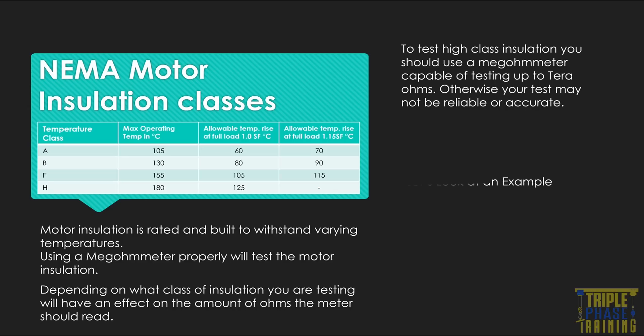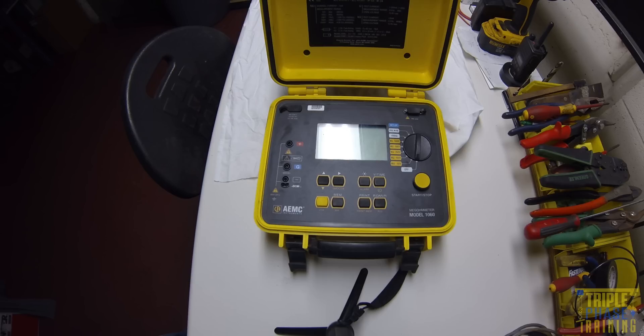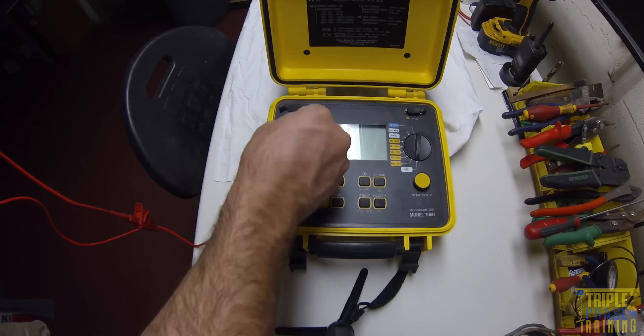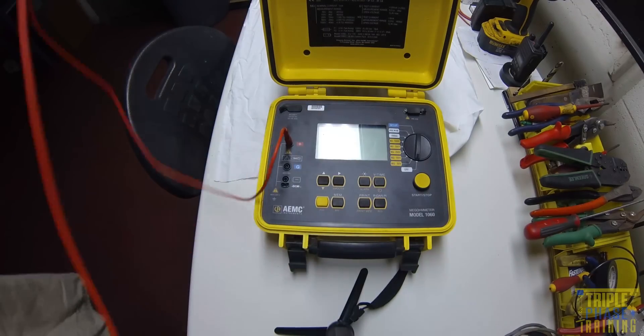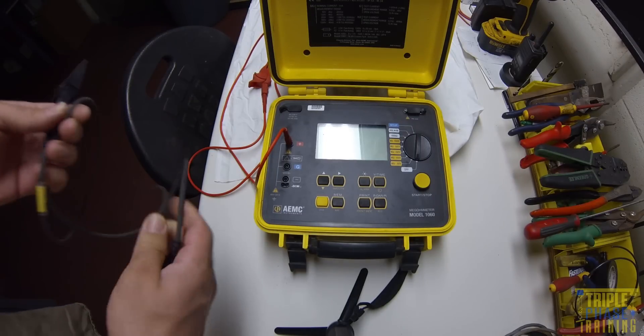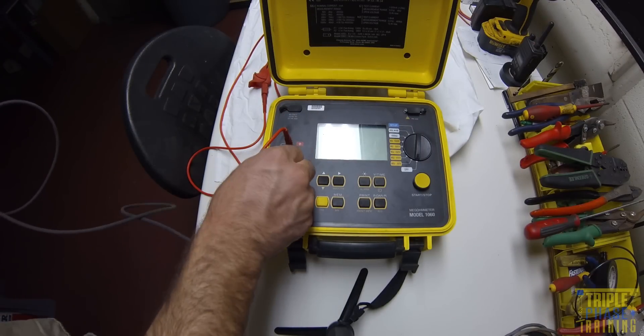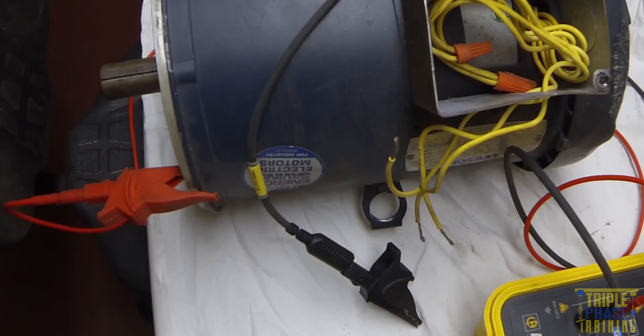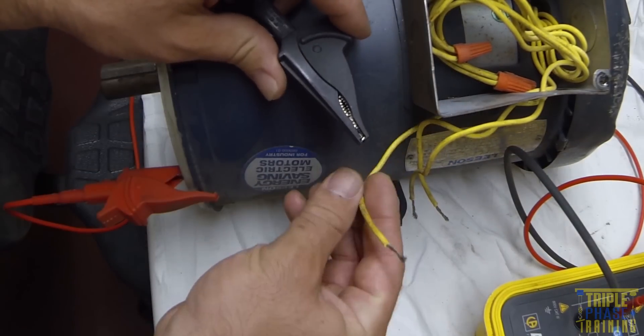Let's look at an example. The megohmmeter we are using is an AEMC model 1060. Be sure to read all the instructions and precautions before using your meter. Connect the appropriate leads to the meter. Then, following the instructions provided by the manufacturer, make the correct connection to the motor casing and motor lead. In this test, the positive lead is connected to the casing and the negative lead is connected to the motor lead.